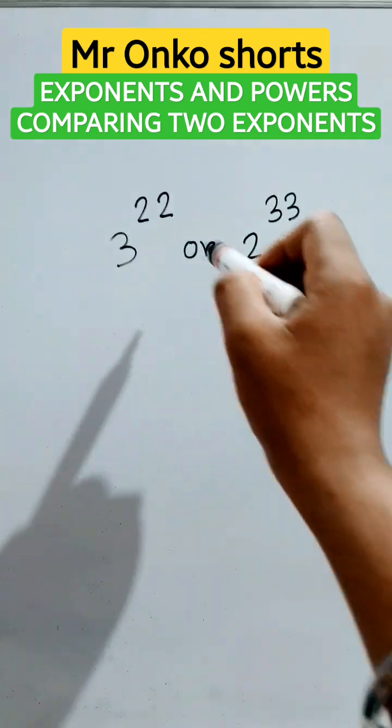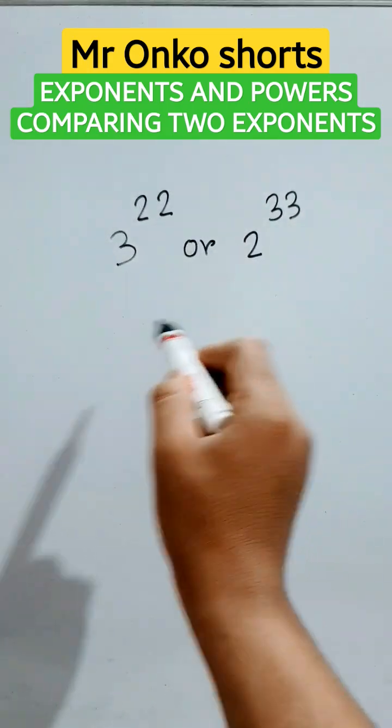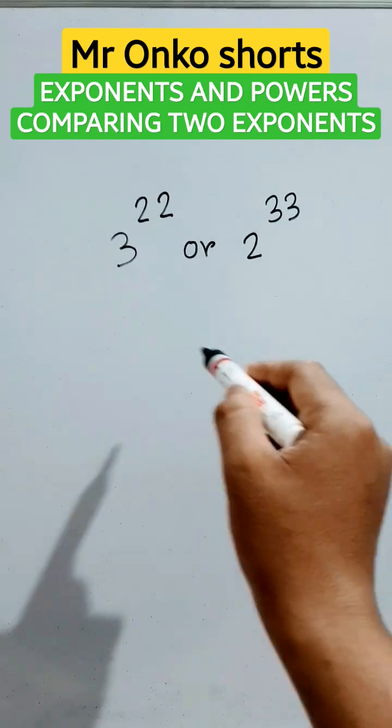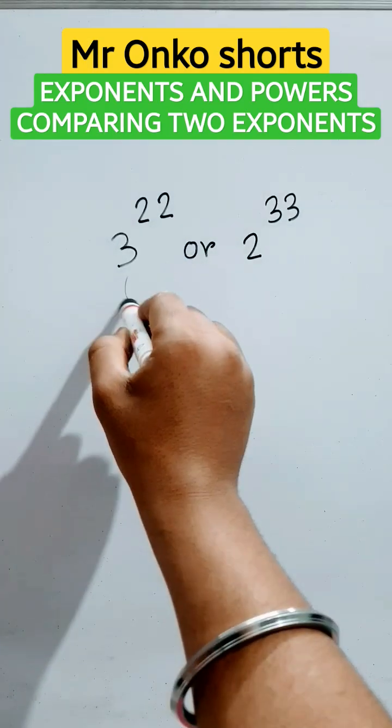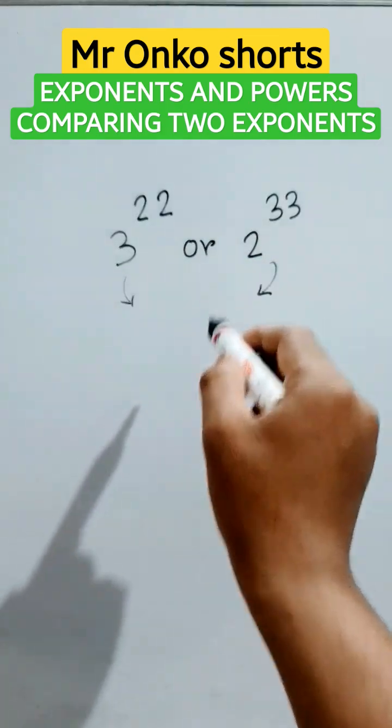This is 3 to the power 22 and 2 to the power 33. Using the laws of exponents and powers, we will briefly calculate which one is greater or less.